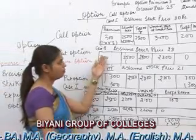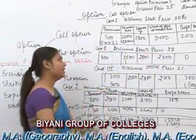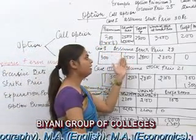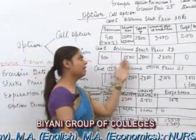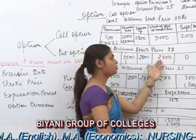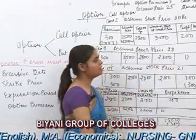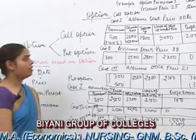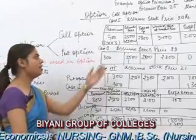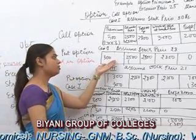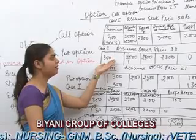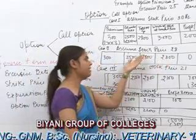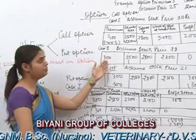In the second case, assume the stock price is ₹28. The premium is still ₹300 and exercise price is ₹2500, so total outgo is ₹2800, which equals the current stock price of ₹2800. This is a situation of no profit and no loss. The investor exercises his call option to save his ₹300 premium — if he buys from the market, he pays ₹2800 directly, but by exercising the call option, he saves ₹300.